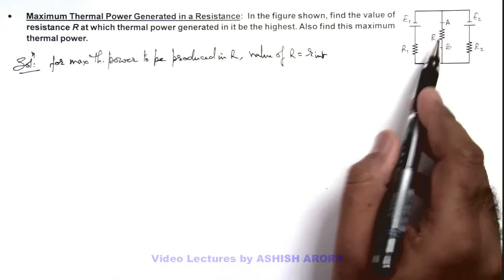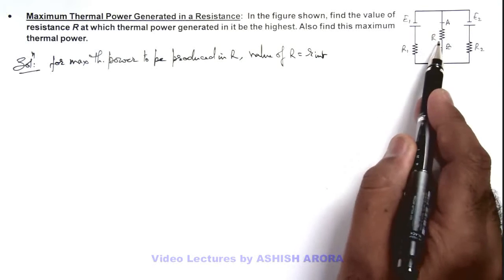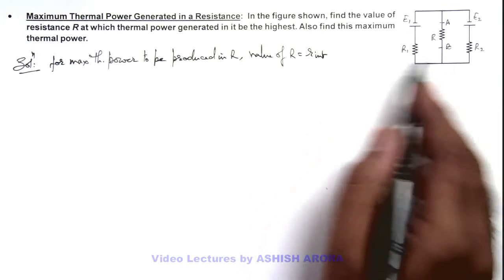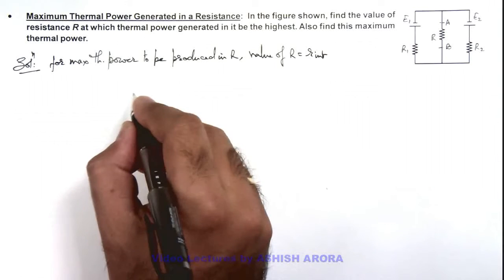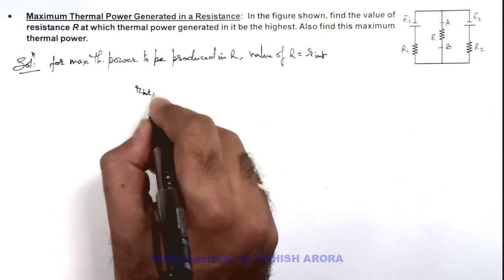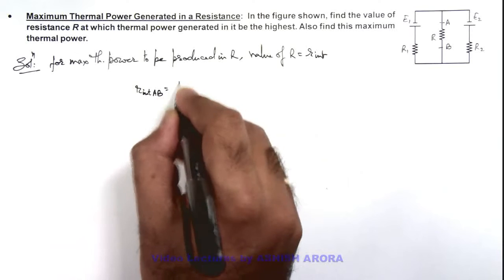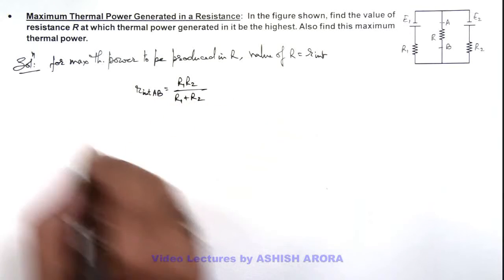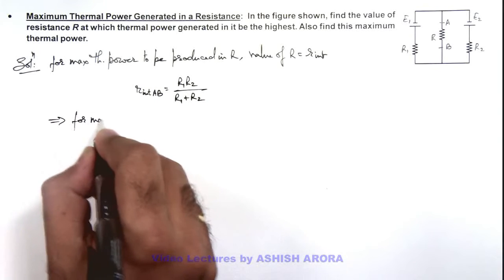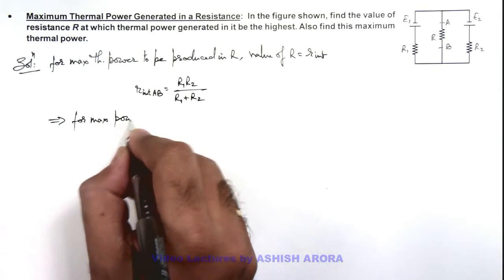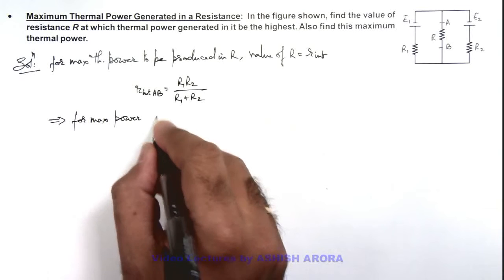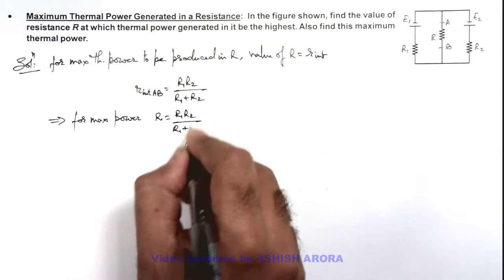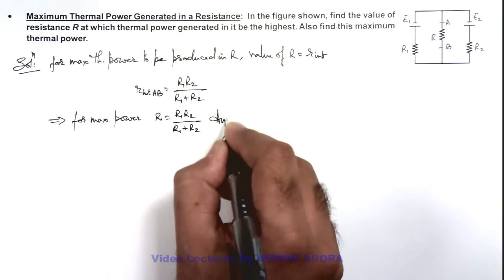If we remove R and find the equivalent resistance across A and B for the remaining circuit, we can see the value will be R1 and R2 in parallel. So the internal resistance of the circuit across terminals A and B is R1*R2 / (R1 + R2). This implies that for maximum power to be dissipated in the resistance, the value of R should be equal to R1*R2 / (R1 + R2).